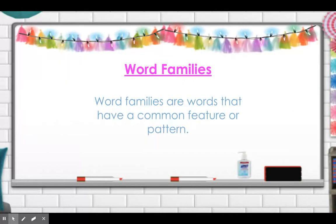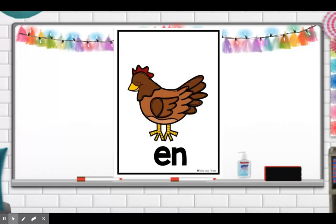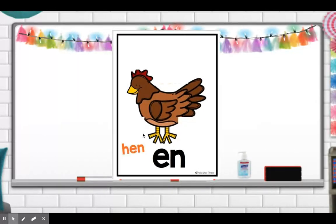That's right — they're part of the same word family. Remember, word families are words that have a common feature or pattern. All of those words belong to the EN family. These are words that all end in the same vowel and consonant sound. So this is a hen — not a chicken, a hen. If I want to make other words, all I have to do is change the first sound and I can make a whole bunch of new words that have the same word family.